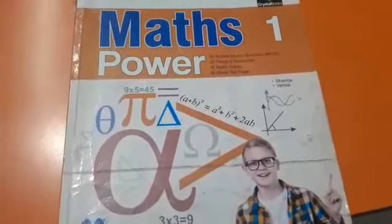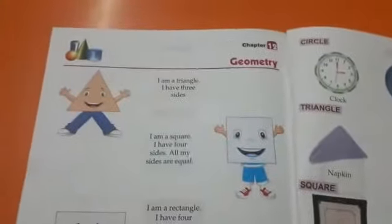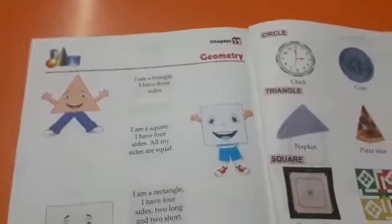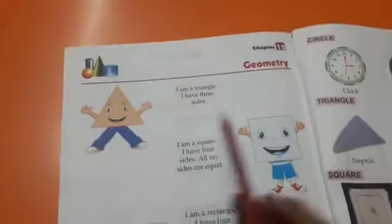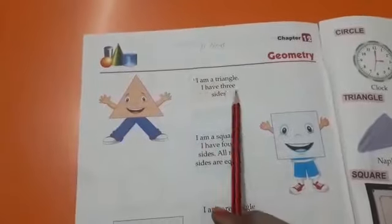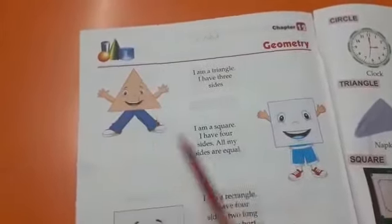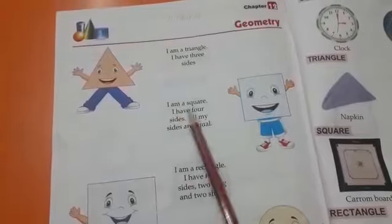Good morning students, let's start math chapter 12, Geometry. In this chapter we will see the shapes. I am a triangle, I have three sides. This is the shape of a triangle. I am a square.